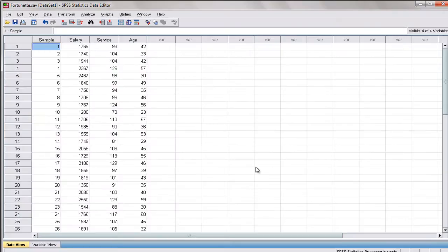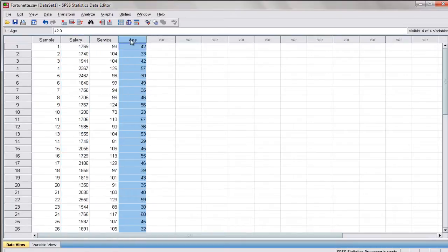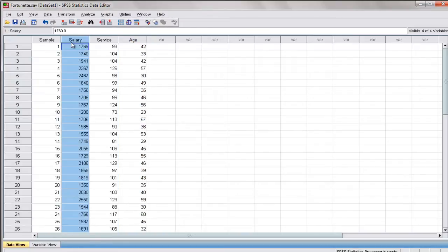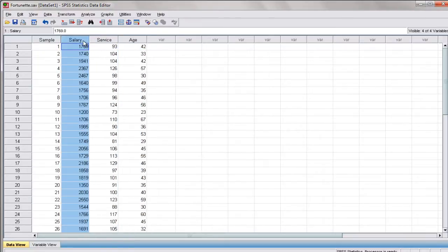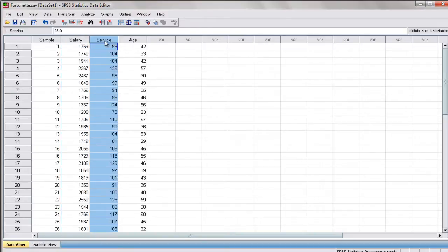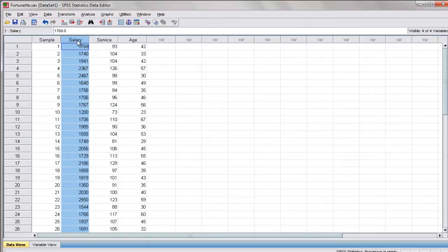Now I have here my data which has salary, service, and age. These are the variables we have. Our dependent variable would be the salary and our independent variables are service and age. Now let's make it a simple computation. We're going to use only one independent variable which is service, and our dependent variable which is salary.